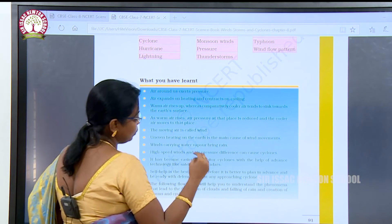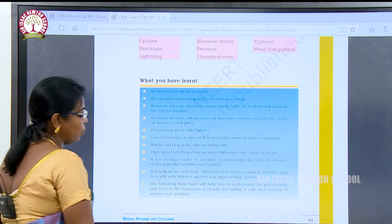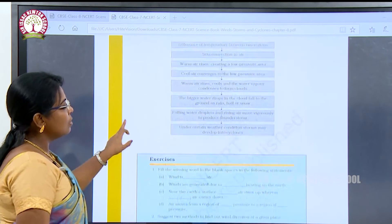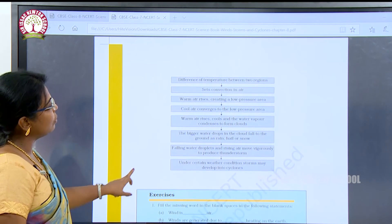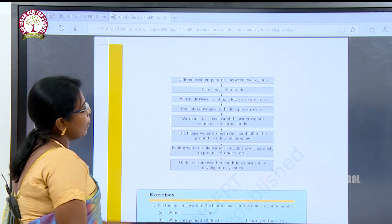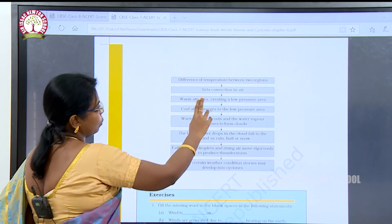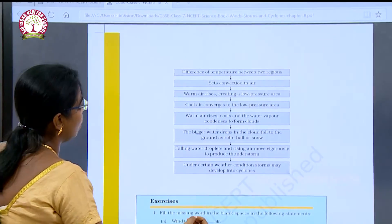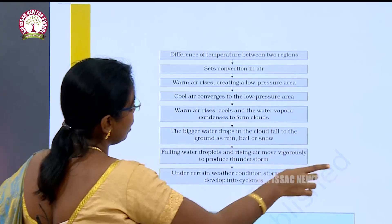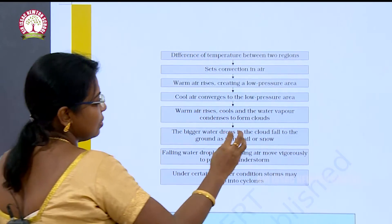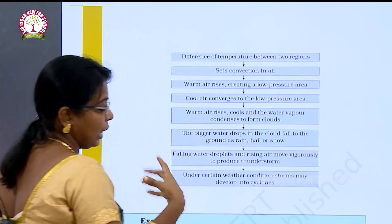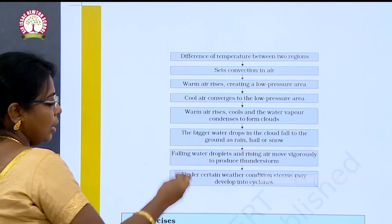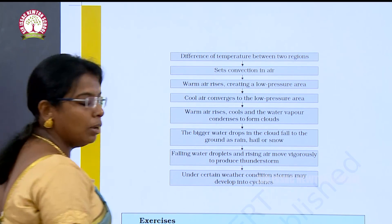A flowchart helps us understand the phenomena that lead to the formation of clouds, rainfall, storms, and cyclones. Differences in temperature between two regions set convection in air. Warm air rises creating a low-pressure area, cool air moves in, and water vapor condenses to form clouds. The bigger water droplets in the cloud fall to the ground as rain, hail, or snow. Falling water droplets and rising air move vigorously to produce thunderstorms. Under certain weather conditions, storms may develop into cyclones.